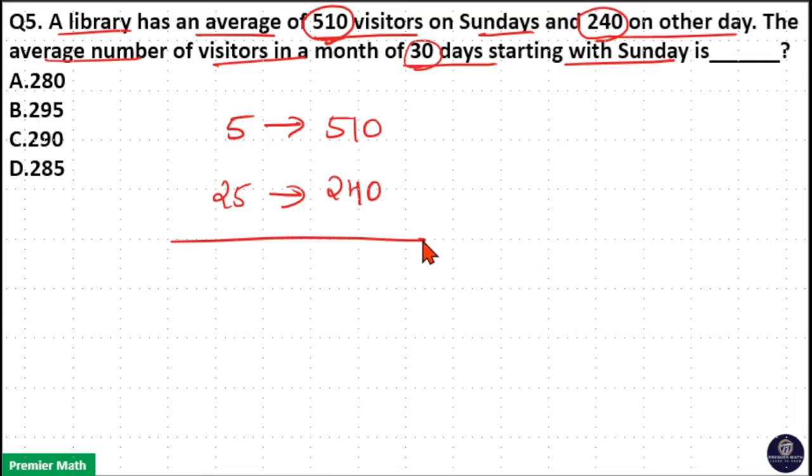Now, we need to find out the average visitors in a month of 30 days. 25 plus 5 is 30. Average of 30 means here 510 can be written as 240 plus 270. You can see 240 is common average.